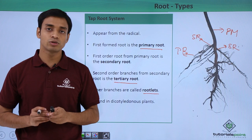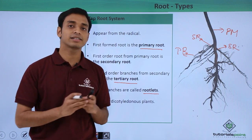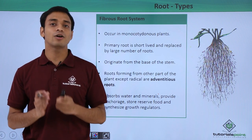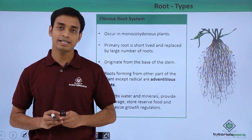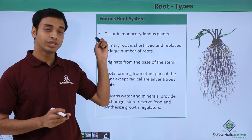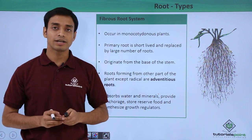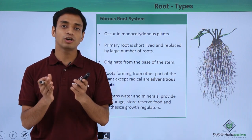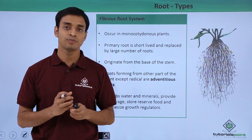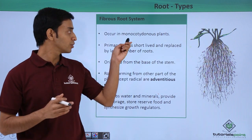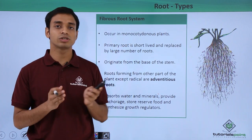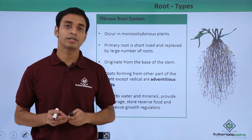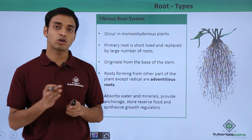Now let us study the fibrous root system and see how it differs from the tap root system. Fibrous roots occur in monocotyledonous plants — plants that produce seeds which cannot be divided into two equal halves and have only one cotyledon, unlike the dicotyledonous plants of the tap root system.